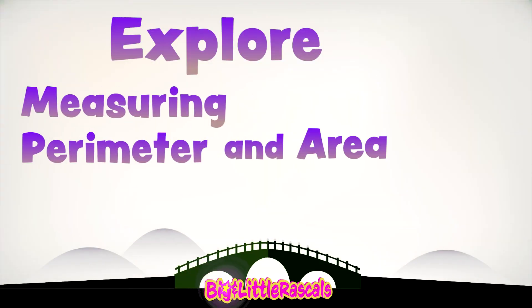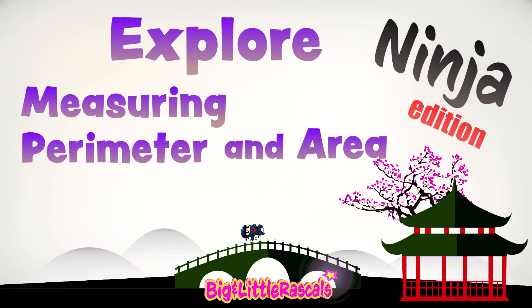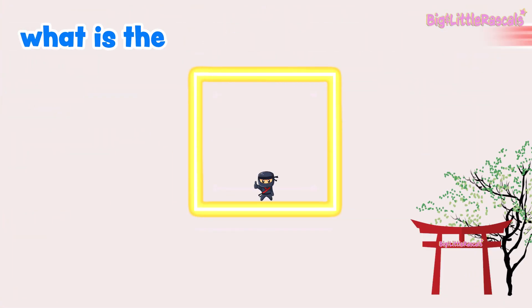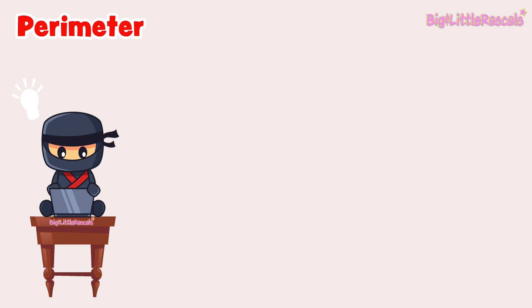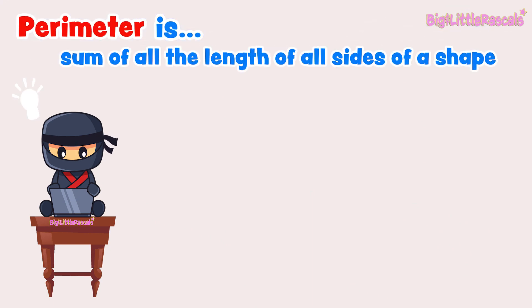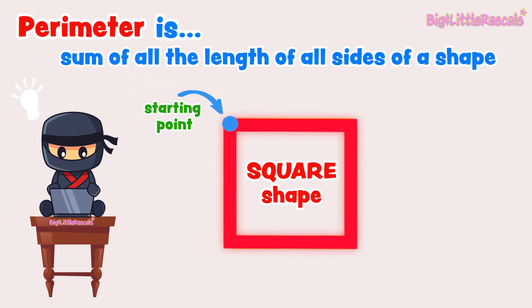Welcome to Measuring Perimeter and Area, Ninja Edition, with Big Elite Rascals Team! Hey Ninja, do you know what is the perimeter of this square shape? First, let's see what perimeter is. Perimeter is the sum of all the lengths of all sides around a shape. Perimeter is one-dimensional because it only sums up all the lengths of all sides of a shape until back to your starting point.